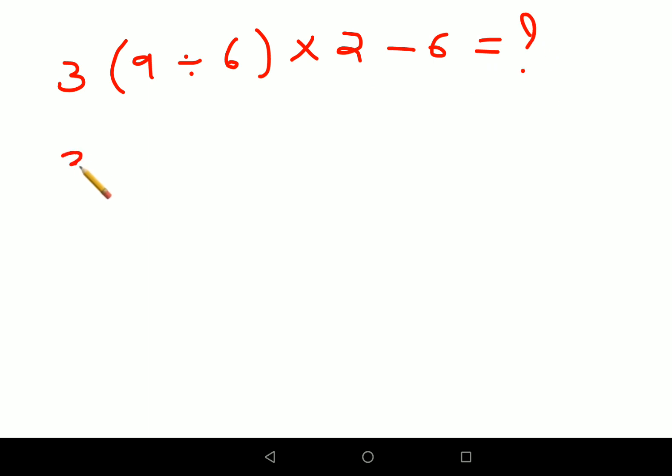So now what you can do is we will keep 3 as it is. First we will do brackets. So 9 upon 6 we will write first, into 2 minus 6 equals to, sorry, we need to find the equal to in this case.